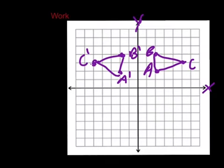Now on to translating. It is asking us to move the figure 5 units down and 8 to the right. We are going to start from A and move it 5 down: 1, 2, 3, 4, 5. And then 8 to the right: 1, 2, 3, 4, 5, 6, 7, 8. We are going to mark that right there and label it A2.